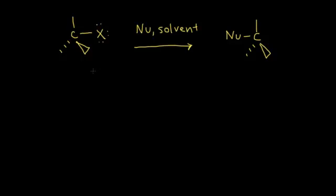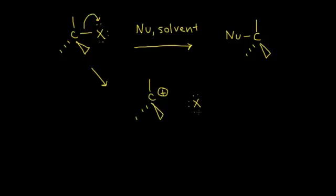In the first step of the mechanism, we get dissociation of our halogen. These electrons are going to kick off onto our halogen, so you need a good leaving group. If those electrons kick off onto the halogen, we took a bond away from our carbon, so our carbon is left as a carbocation — it's positively charged. Our halogen gets an extra lone pair of electrons, giving it a negative-1 formal charge. Halogens are relatively stable with a negative formal charge, making them good leaving groups.